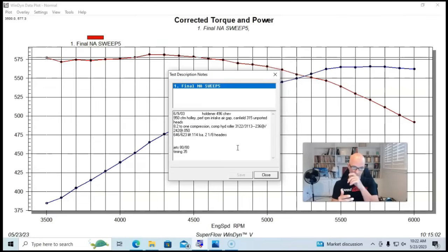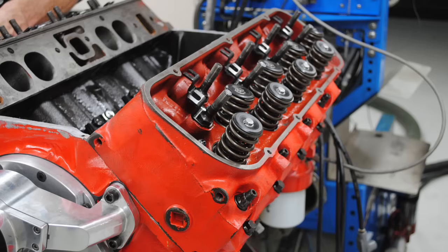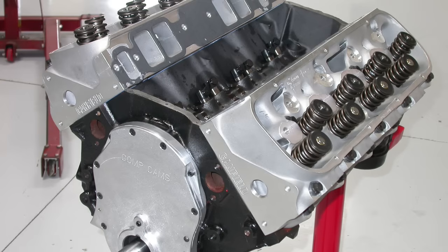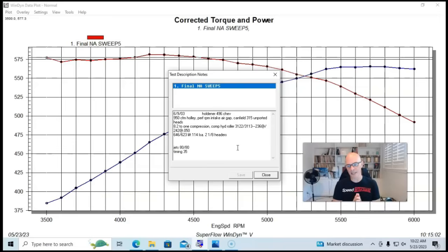We also replaced the ported 049 heads with the set of Canfield, 315 CC intake port, aluminum heads that were unported. They were just as cast from Canfield and it's a cylinder head that I kind of wanted to try back in the day. We were lucky enough that they supplied a set and they worked very well.